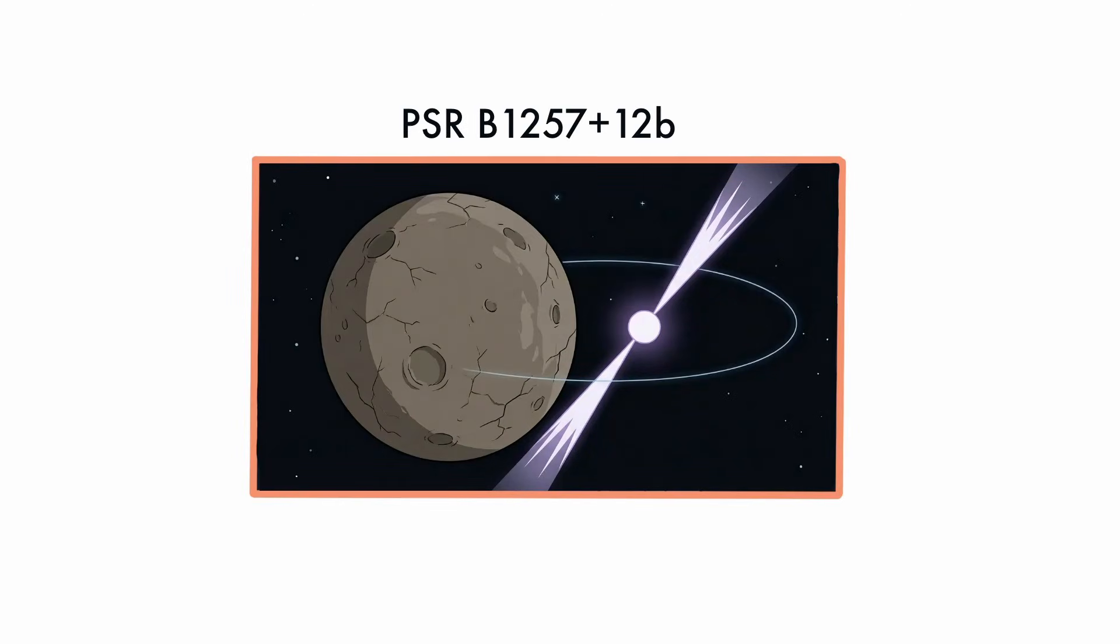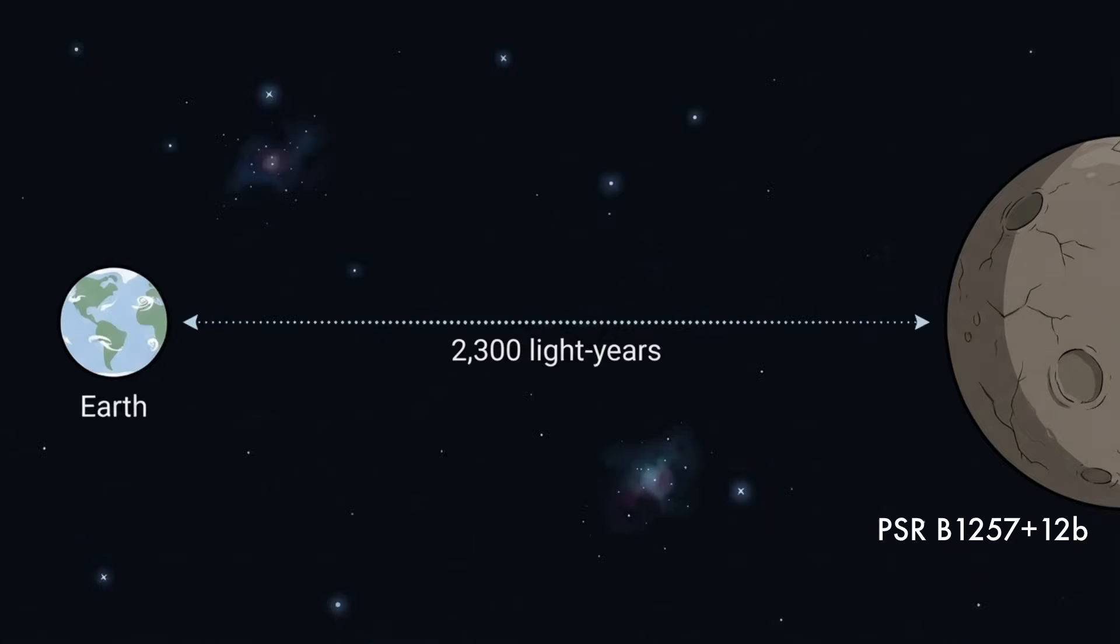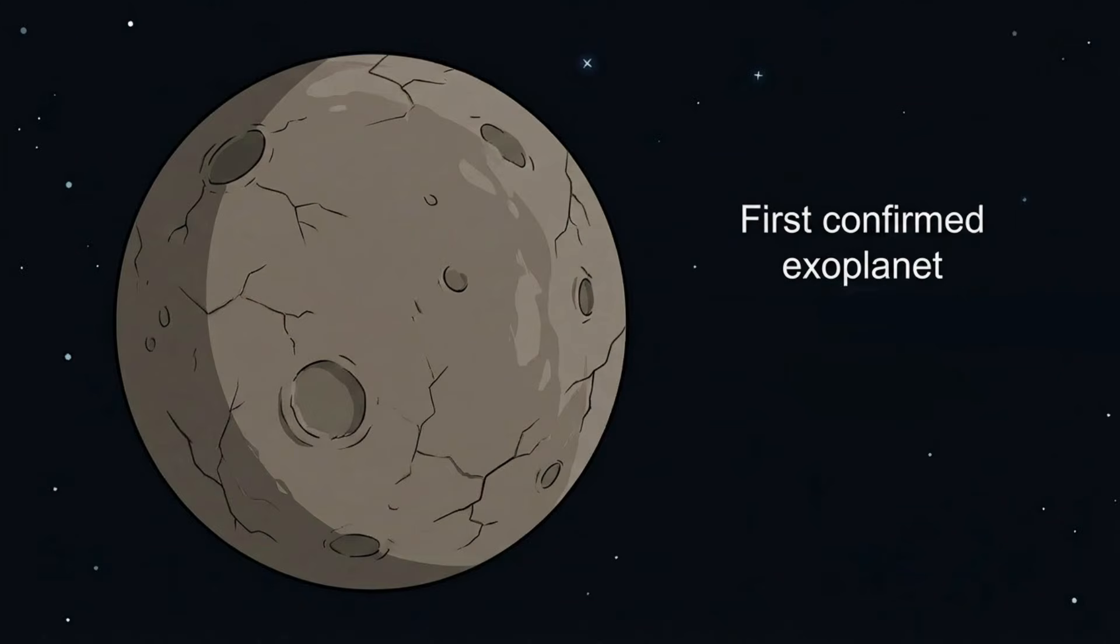PSR B1257-12b, a planet that shouldn't exist. PSR B1257-12b is located about 2,300 light-years from Earth in the constellation Virgo. It is one of the first confirmed exoplanets ever discovered, detected in 1992.